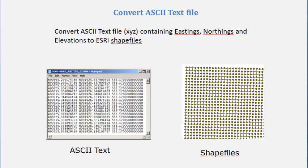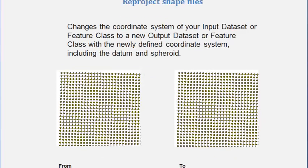We're going to receive some ASCII text files and we're going to have to convert those into a shapefile. The ASCII text files will contain X, Y, and Z values — in this case, eastings, northings, and a height value.